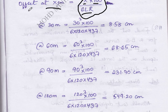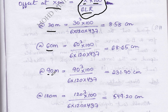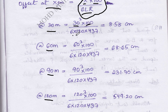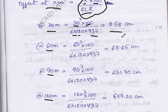The x values to calculate offsets are 30, 60, 90, and 120 meters. For x equal to 30 meters, we substitute: 30 cubed into 100 divided by 6 into L which is 120 and R which is 437. We get 8.5 centimeters. Similarly, we calculate for 60, 90, and 120 meters.